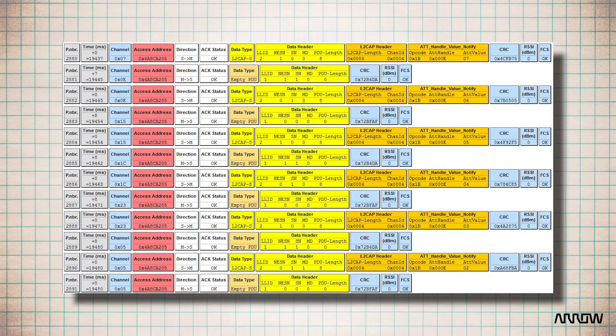The NESN (Next Expected Sequence Number) performs the acknowledgement, informing the receiving device of the next sequence number the transmitter expects. We can check: when the slave has a NESN equal to one, the SN sent by the master is one. At the next communication event, the NESN is zero and the master answers with an SN equal to zero.